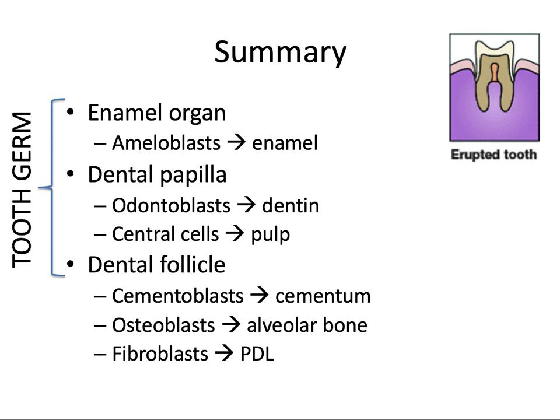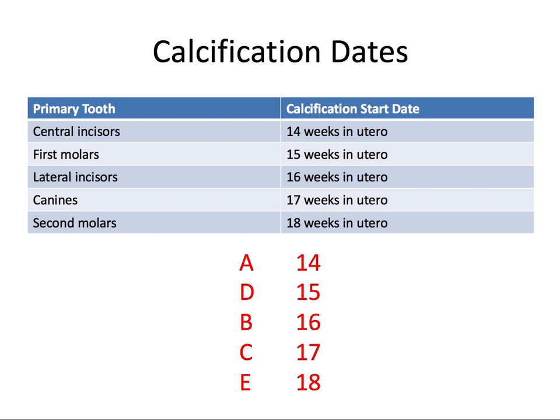Now for some other important dates to know, these are approximate calcification dates for the primary teeth, arranged ideally for the best and easiest memorization. The calcification of primary tooth roots is normally completed at around three to four years of age. This table is about the crowns and when they're starting to calcify. Here's a handy memorization tool: using ortho language, the A's are the central incisors, the B's are lateral incisors, C's are canines, D's are primary first molars, and E's are second molars.